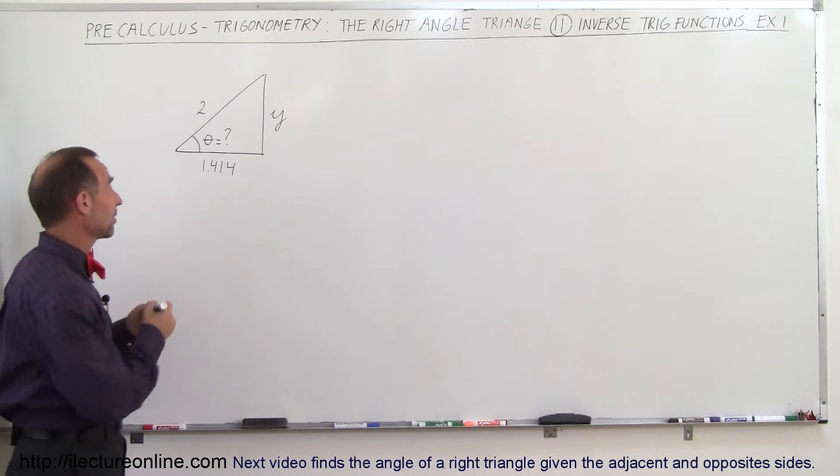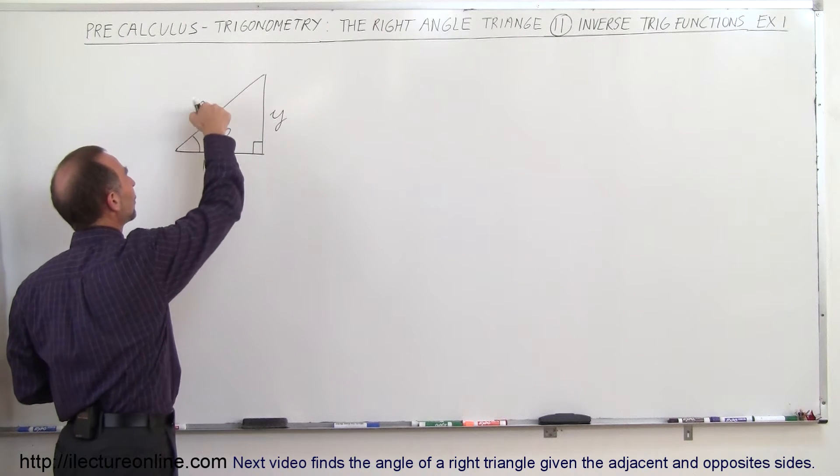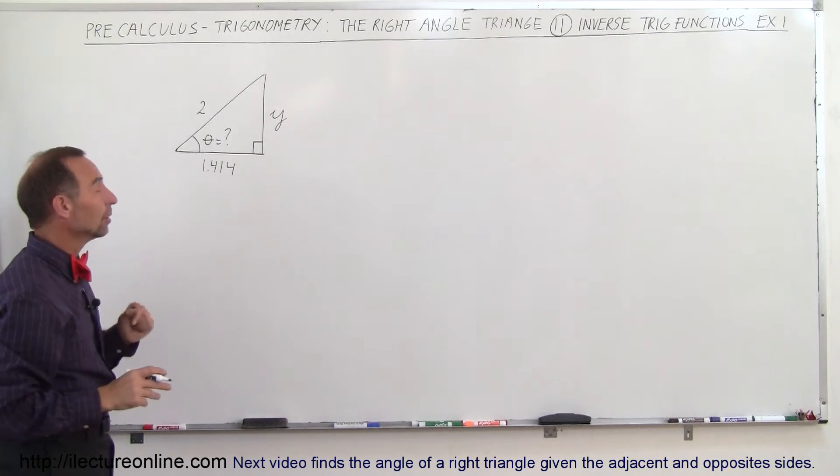So here we have a triangle, it's a right triangle, it's a nine degree angle. We don't know this angle, we know the hypotenuse, we know the adjacent side, we don't know the opposite side and we're asked to find the angle.